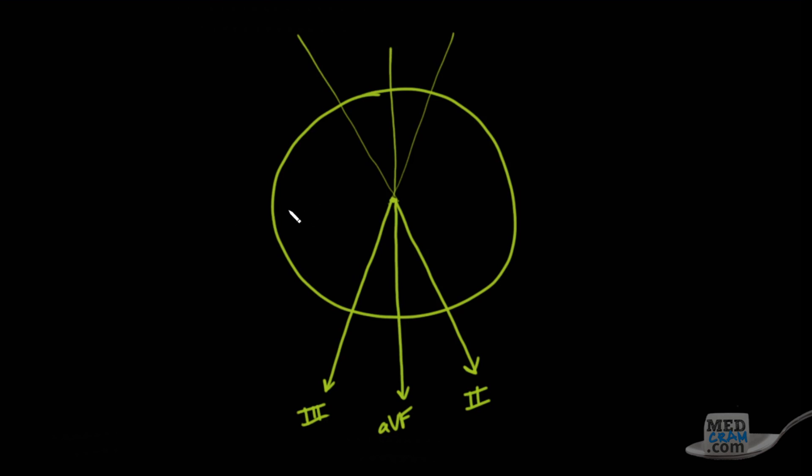We know that lead one goes off in this direction. So that's Roman numeral one. Really all you have to do is fill in the other ones. That's going to be AVR because that's the right side of the body, and here that's going to be AVL. So we should have six leads: one, two, three, four, five, and six. Each of these is spaced out by 30 degrees.